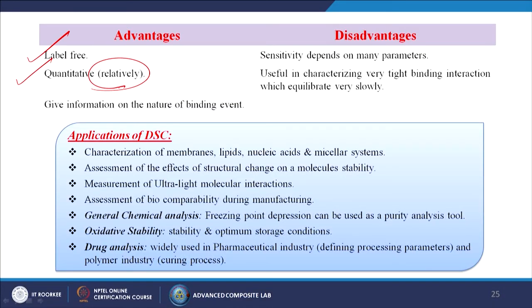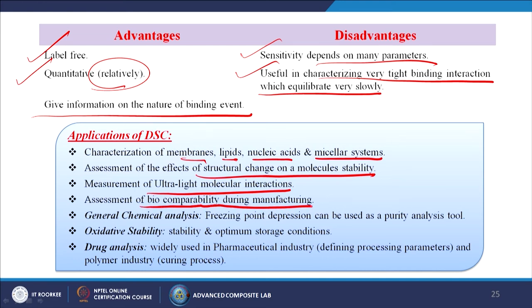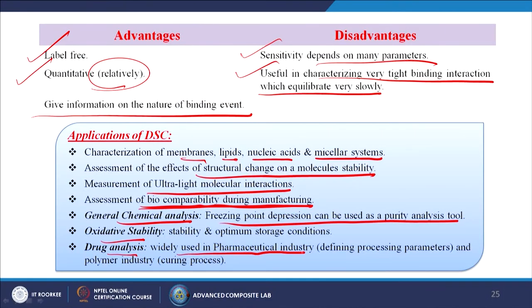Advantages of DSC: it is baseline-free and relatively quantitative. Disadvantages: sensitivity depends on many parameters; useful in characterization of very tight binding interactions which equilibrate very slowly, giving information on the nature of the binding event. Applications of DSC: characterization of membranes, lipids, nucleic acids, or micellar systems; assessment of effects of structural change on molecule stability; measurement of ultra-tight molecular interactions; assessment of biocompatibility during manufacturing; general chemical analysis — freezing point depression can be used as a purity analysis tool; oxidative stability and optimum storage conditions; drug analysis — widely used in pharmaceutical industry for defining processing parameters; and polymer industry for the curing process.